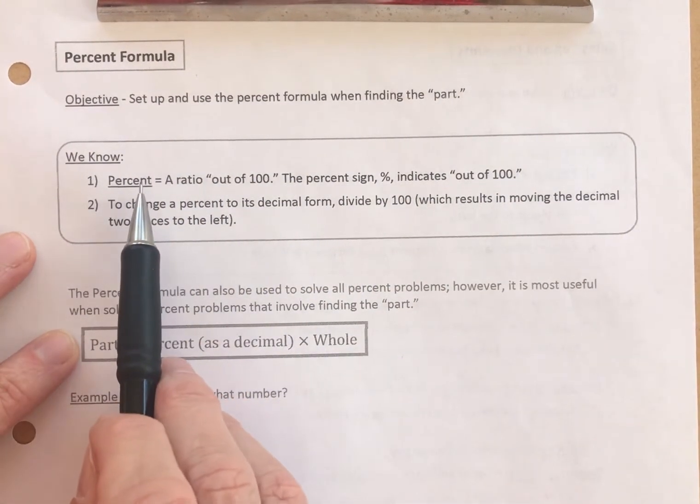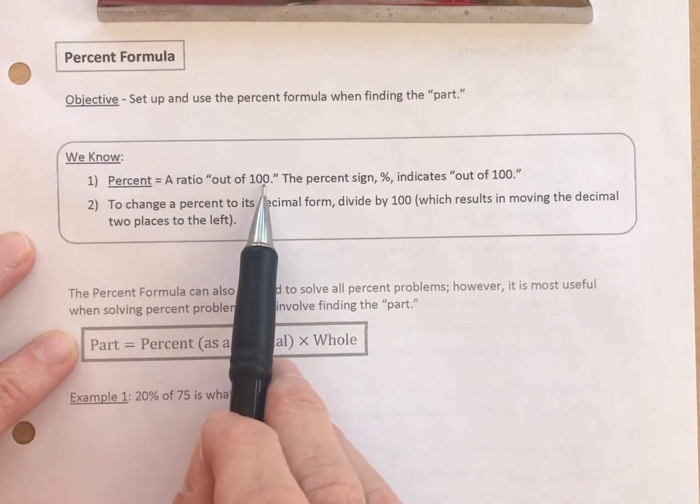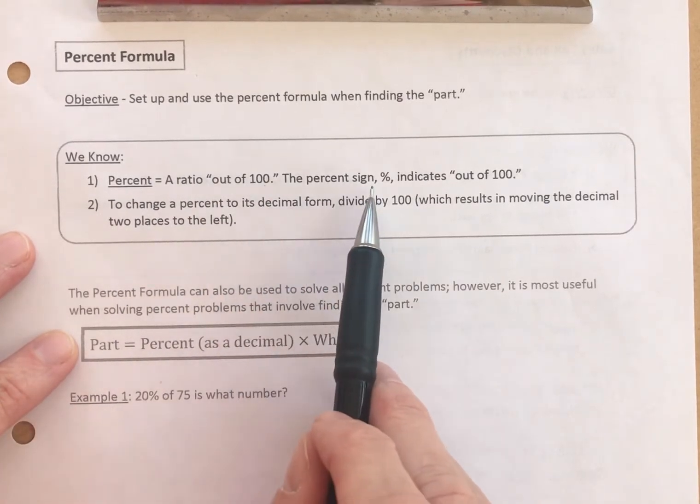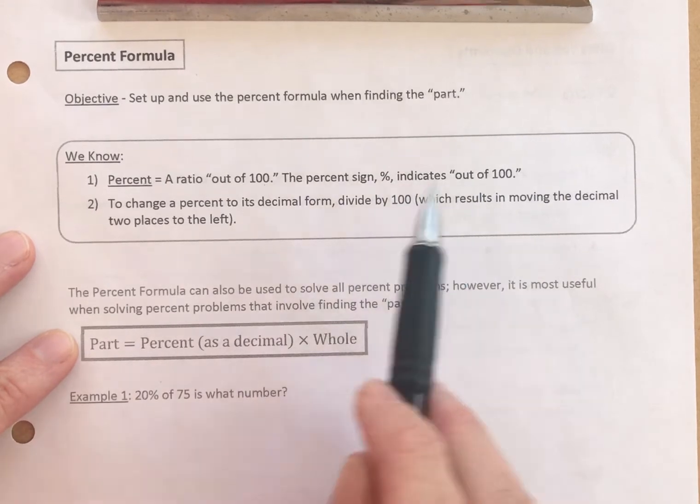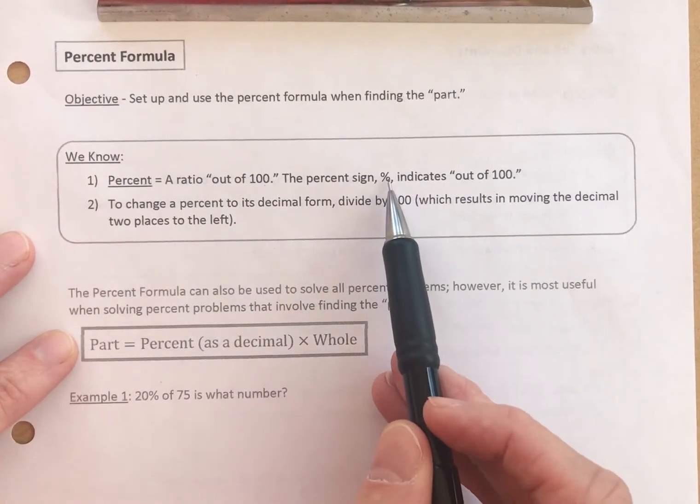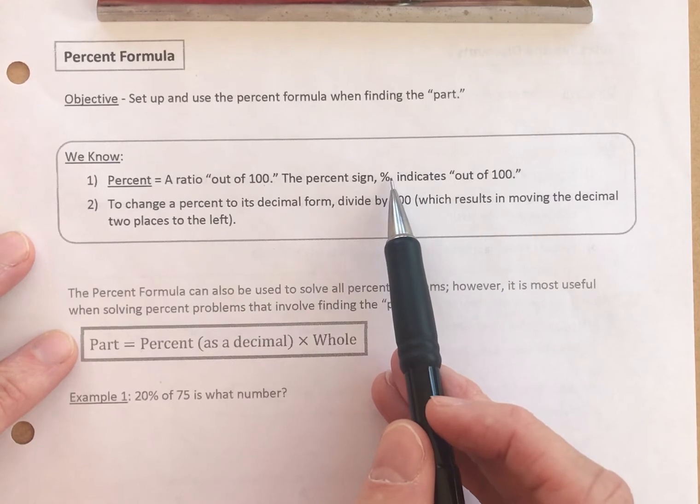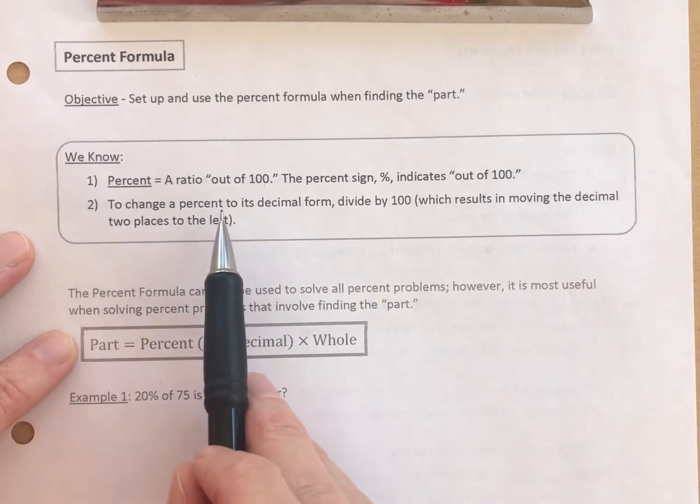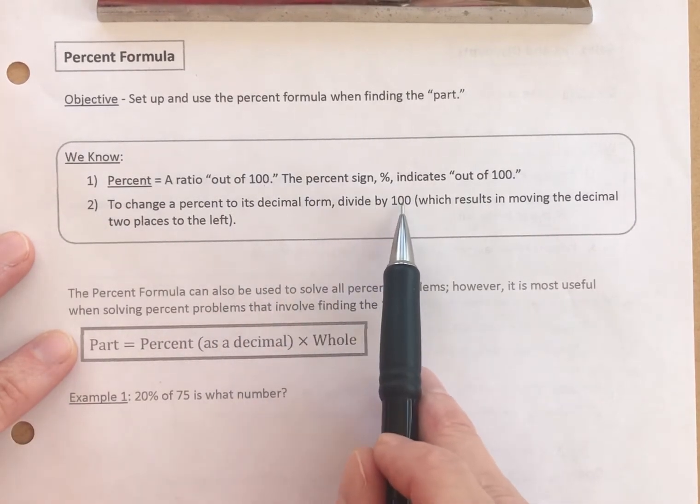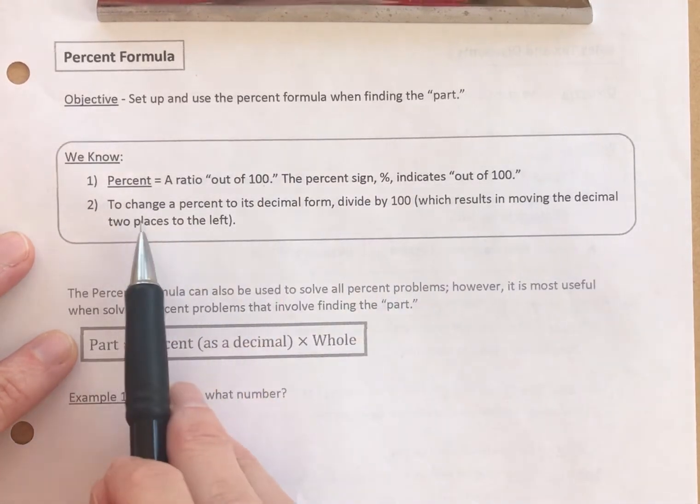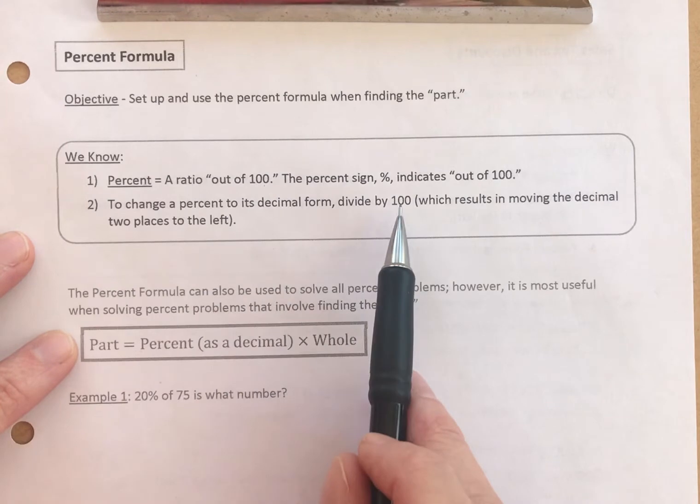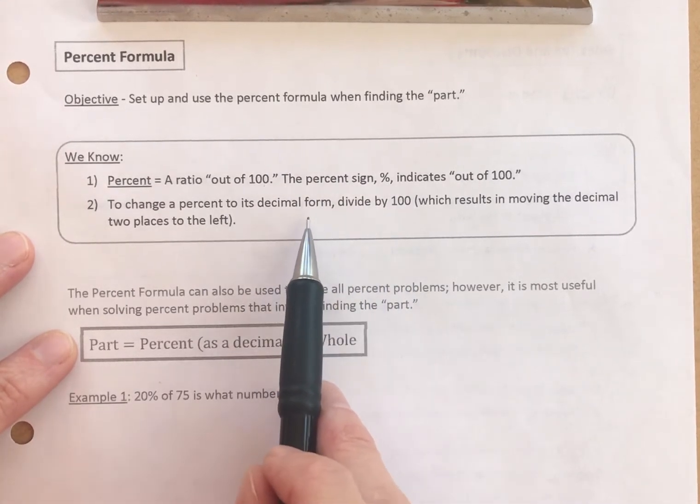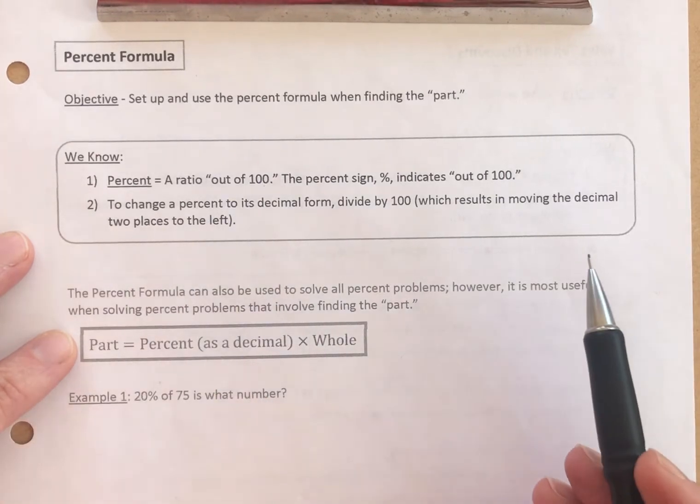What do we know? Well, we know that percent is a ratio out of 100. The percent sign indicates that out of 100. The percent sign replaces that 100 denominator. And we also know that to change a percent to its decimal form, we divide by 100. And that results in moving the decimal two places to the left. Dividing by 100 is making a number smaller, and moving the decimal to the left is also making the number smaller.